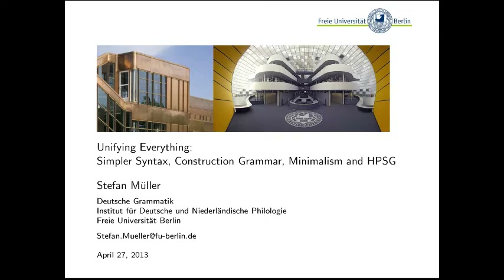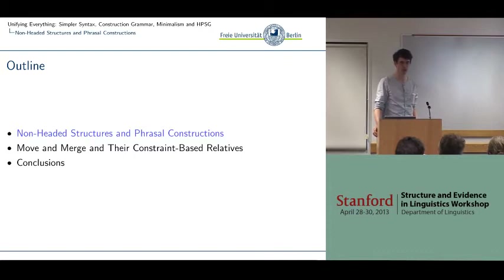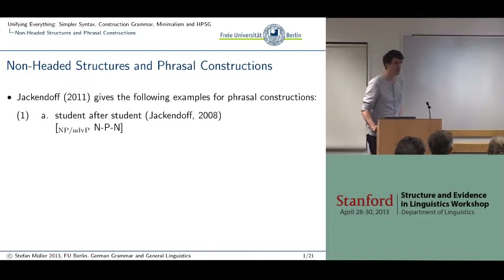My talk will be about some general issue about how a general theory of grammar should be set up and organized. It's related to a paper that Jackendorf published in Language two years ago. The talk will be structured as follows: I will first give some of the arguments that Jackendorf gave, discuss it very briefly, then go on to discuss minimalist theories of move and merge, and then draw some conclusions.